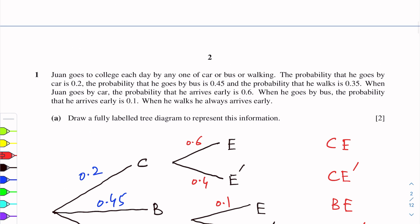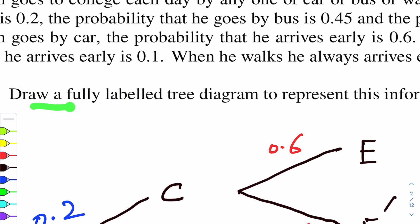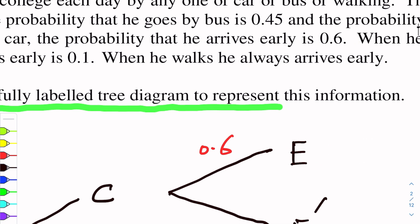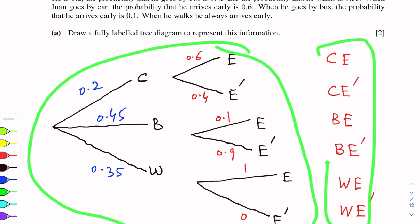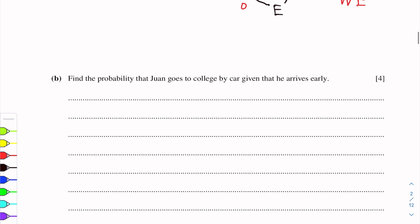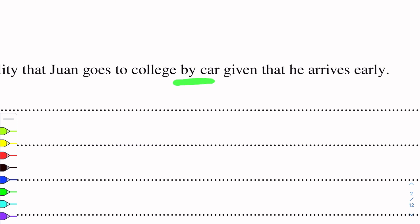We have now drawn the fully labelled tree diagram with all possible outcomes. Next is Part B: find the probability that Johan goes to college by car given that he arrives early. This is a conditional probability question because there are two events — goes to college by car, given that he arrives early.